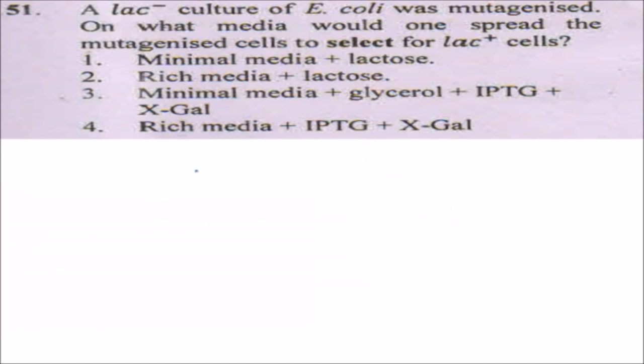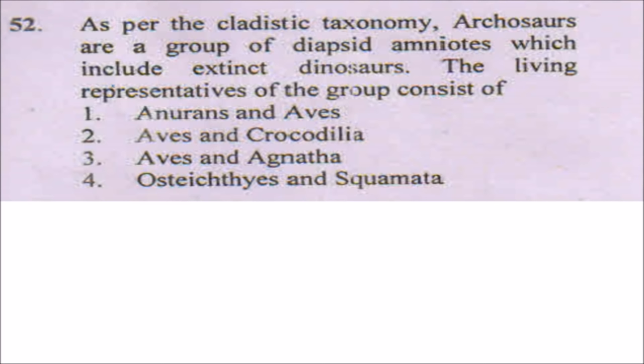The next question: a lac-minus culture of E. coli was mutagenized — on what media would one spread the mutagenized cells to select for lac-positive cells? We will use minimal media because with rich glucose media we cannot detect lac-positive cells (cells grow using glucose). We will also use IPTG (isopropyl beta-D-1-thiogalactopyranoside), which mimics allolactose and activates the lac operon, and X-gal, making it easy to pick out colonies by color (blue-white screening). So we will use option number three to select for lac-positive cells.